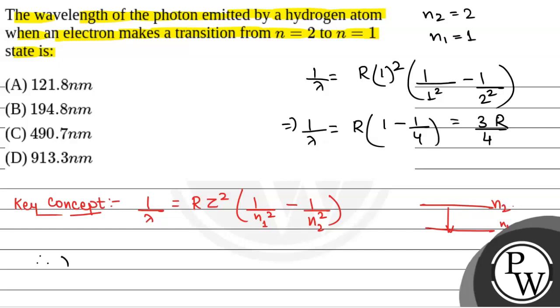Therefore, lambda equals 4 by 3 R. Now, we know the value of R is the Rydberg constant which is 1.097 times 10 to the power 7 per meter. So this will be equal to 4 by 3 times 1.097 times 10 to the power 7 per meter.